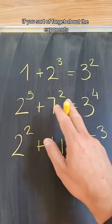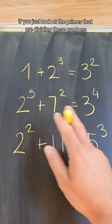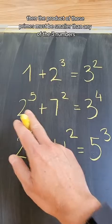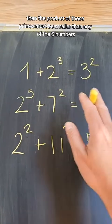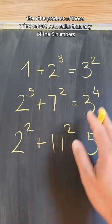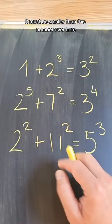And in particular, if you sort of forget about the exponents, if you just look at the primes that are dividing these numbers, then the product of those primes must be smaller than any of the three numbers. In particular, it must be smaller than this number over here.